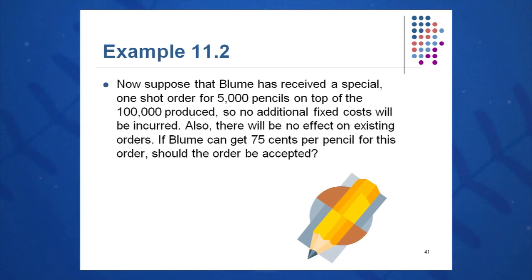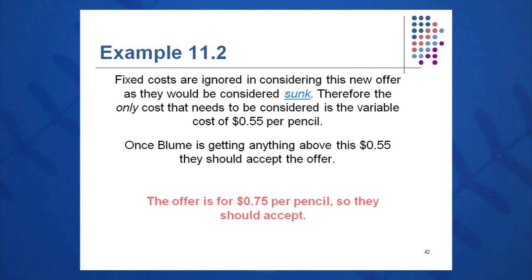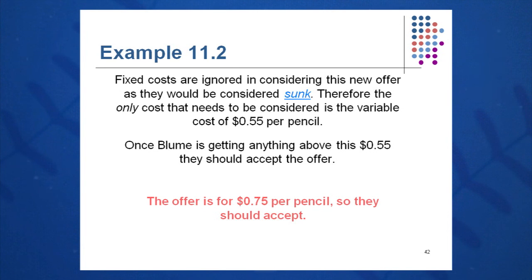Suppose you get a one-time special order for 5,000 more pencils on top of the 100,000, with no additional fixed costs incurred. Should we take the offer if we can get 75 cents per pencil? All we need to do is calculate the contribution margin: selling price minus variable cost. So 75 cents minus 55 cents gives 20 cents extra per pencil. Fixed costs are considered a sunk cost in this case, so we move forward with that extra offer.